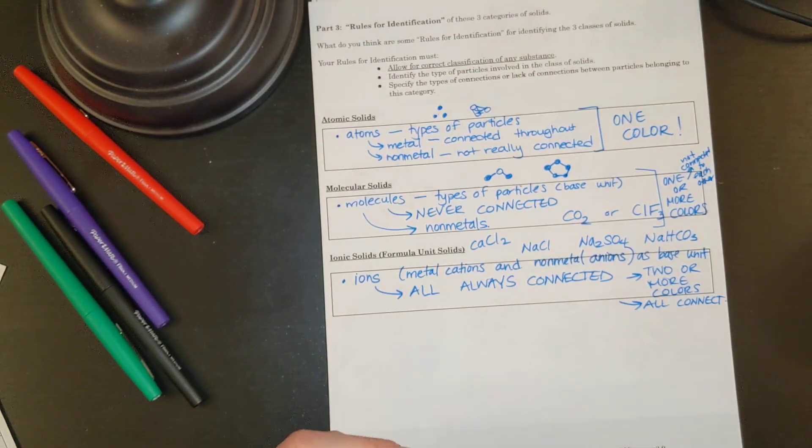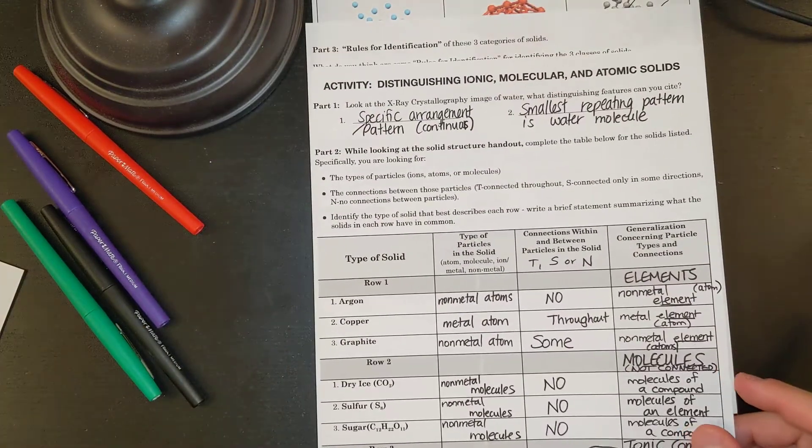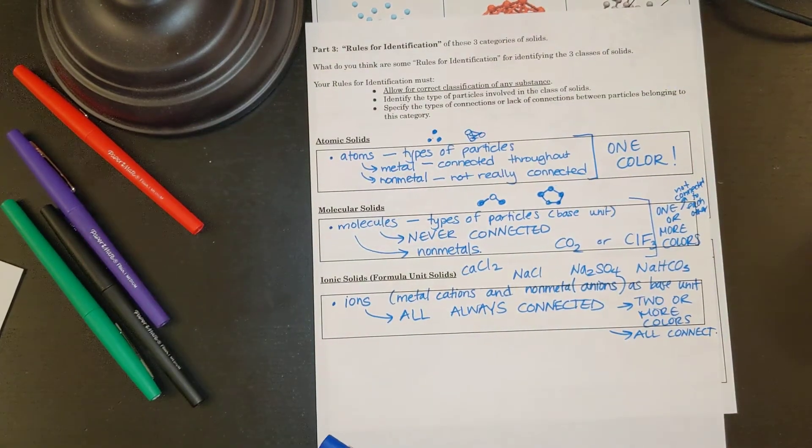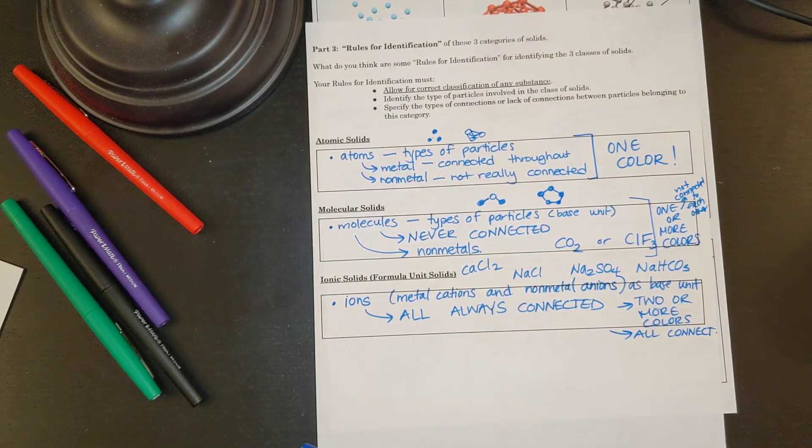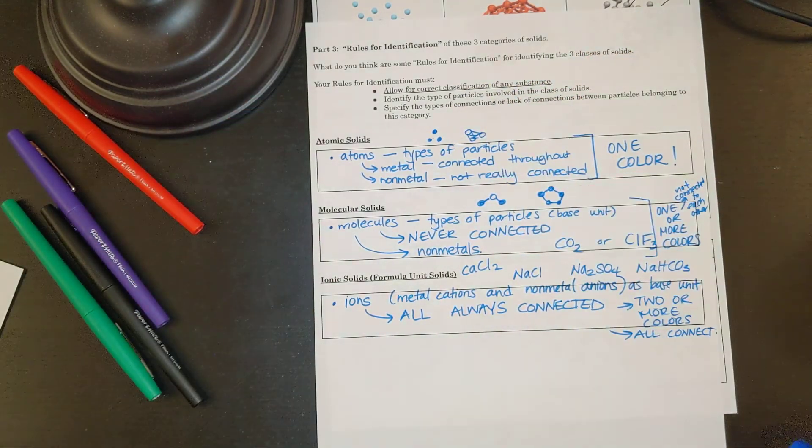Alright, Honors Chemistry. That concludes part two of the activity for distinguishing ionic, molecular, and atomic solids. Make sure you save or have this on hand if you want to help you distinguish and identify what type of solids are atomic solids, molecular solids, and ionic solids.